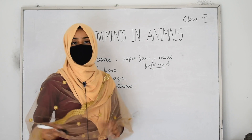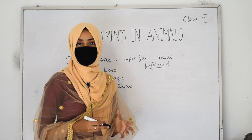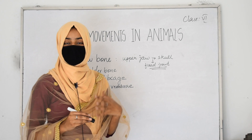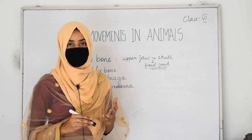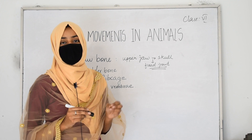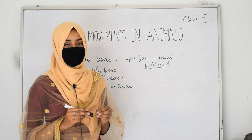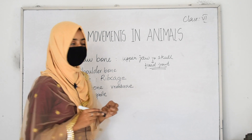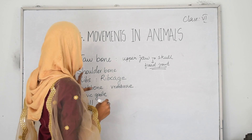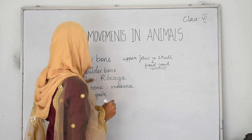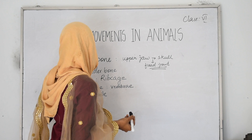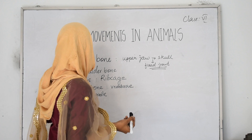The next bone is the shoulder bone. When you see your shoulders, a bony part is protruding out. Those bones present in our shoulder that protrude are called shoulder bones.